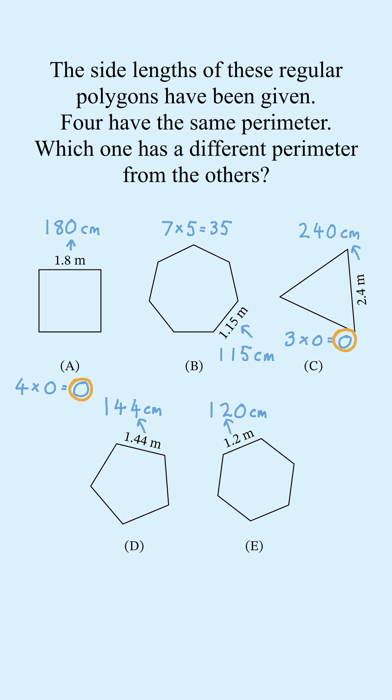We could stop here as we have two the same and one different, but let's check the others to be sure. For D and E, we also get 0.